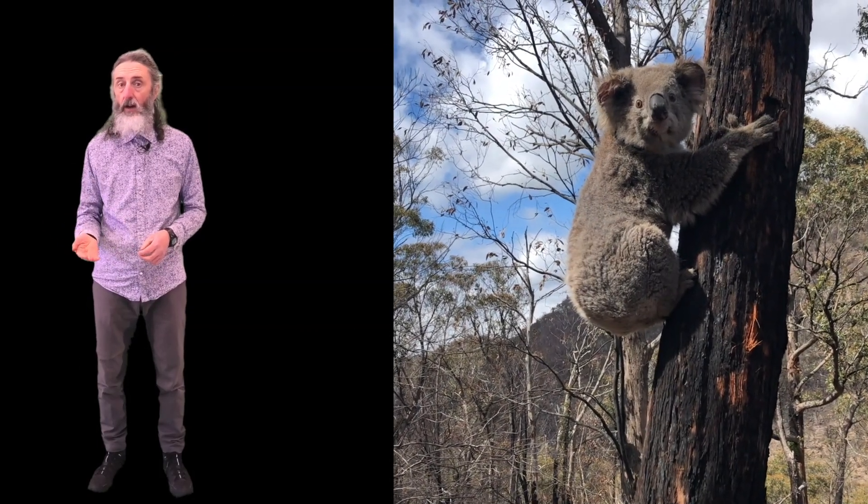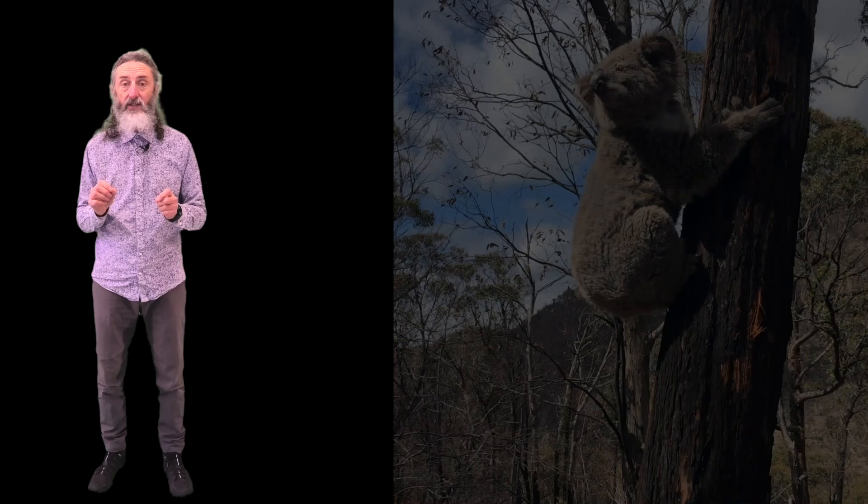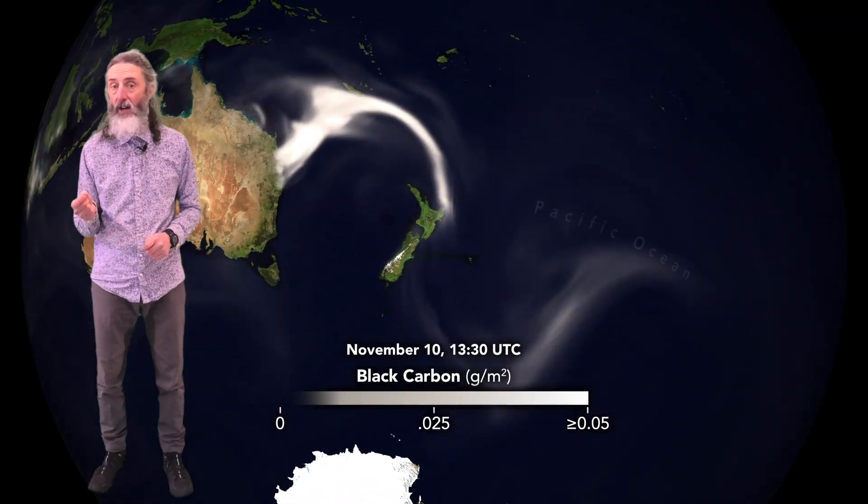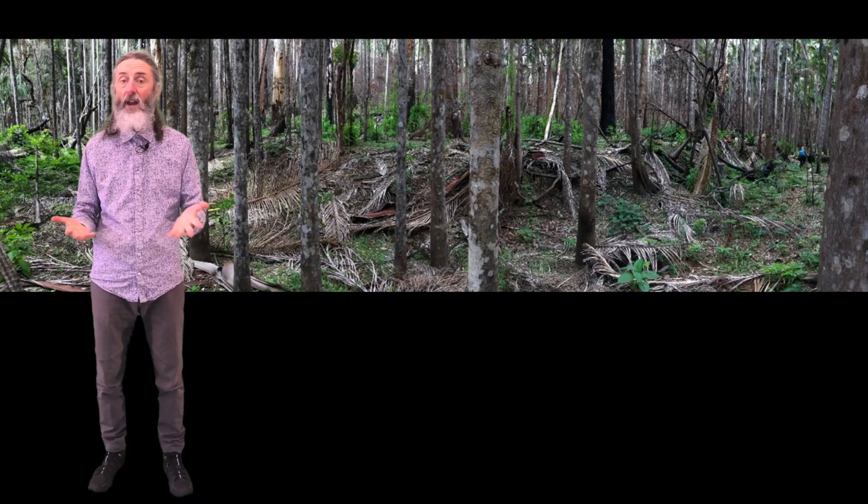The 2019-20 fires in Australia burnt 10.3 million hectares, including the largest area burnt at high severity on record. Gondwanan rainforest burnt and massive fire-generated storms erupted.